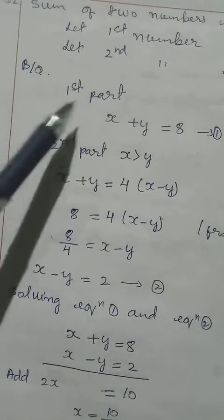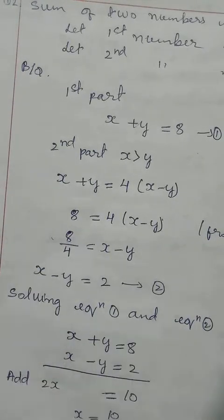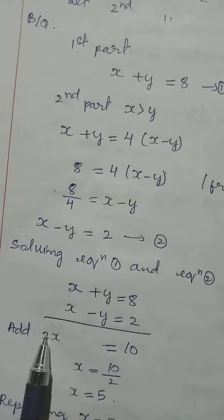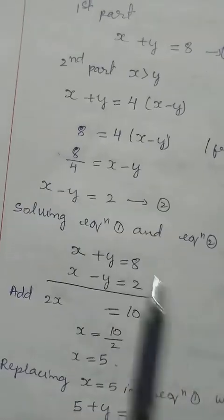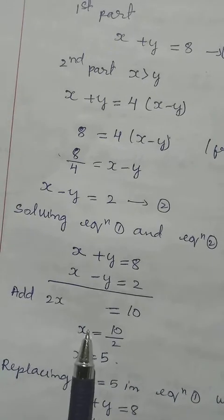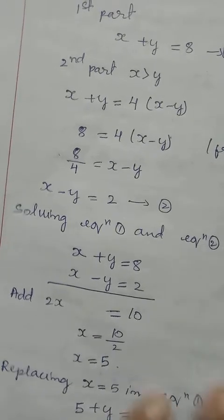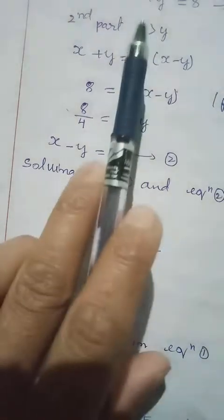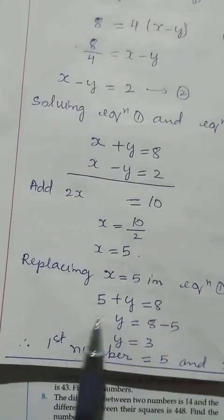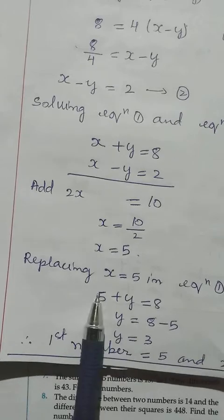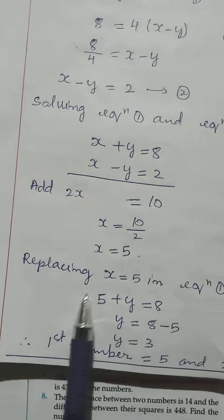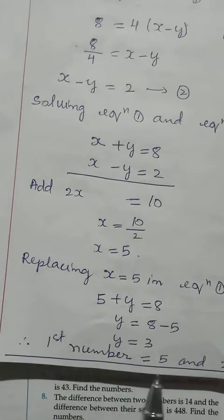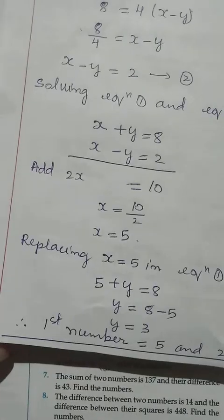We solve equations 1 and 2 simultaneously. Both equations have equal coefficients, so we add them. Adding: 1 plus 1 gives 2x; the y terms cancel; 8 plus 2 equals 10. So x equals 10 divided by 2, which equals 5. Substituting into equation 1: 5 plus y equals 8, so y equals 3. The first number is 5 and the second number is 3.